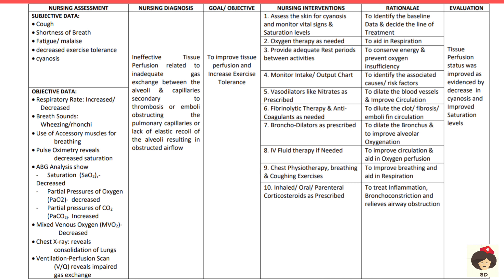When oxygen is not exchanged in alveoli and capillaries, blood has no oxygen and tissues do not receive oxygen. Subjective data: cough, shortness of breath, fatigue or malaise due to no oxygen in tissues, decreased exercise tolerance, and cyanosis — blue skin discoloration from absence of oxygen in blood. Objective data: respiratory rate decreased or increased, abnormal breath sounds, accessory muscle use, decreased pulse oximetry saturation, ABG showing decreased PO2 and increased PCO2, and decreased mixed venous oxygen (MVO2).